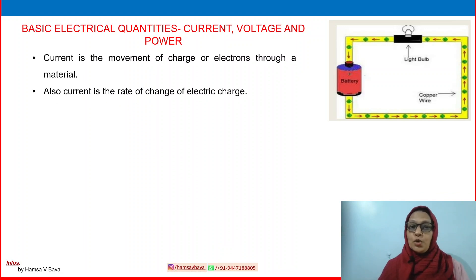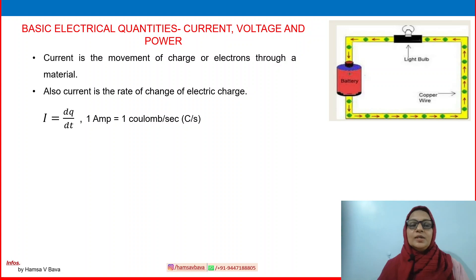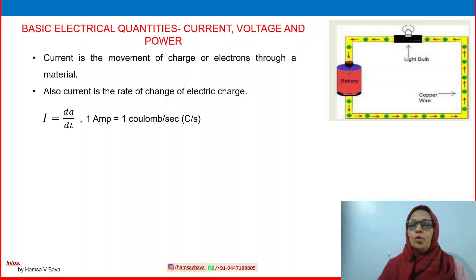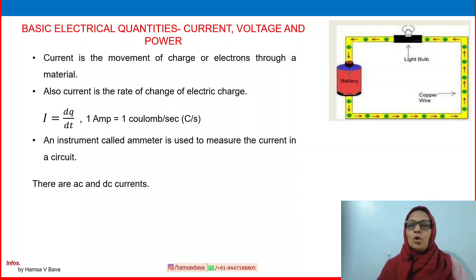If we denote current as I — that is the conventional notation — and charge as Q, then I = dQ/dt. A current of 1 ampere means 1 coulomb per second. An ammeter is the instrument used to measure current.